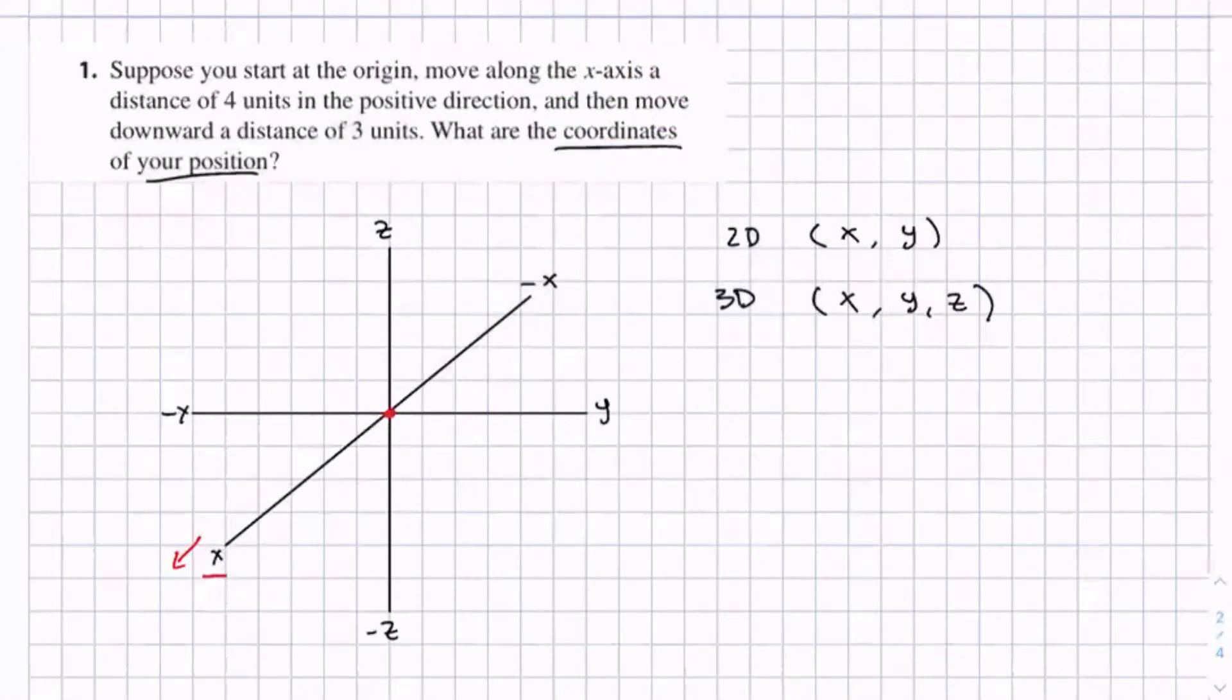So let's move 4 units. This is kind of arbitrary, so I didn't really label the tick marks, but 1, 2, 3, 4. So let's say this is 4 units.